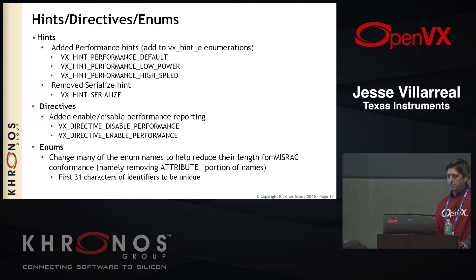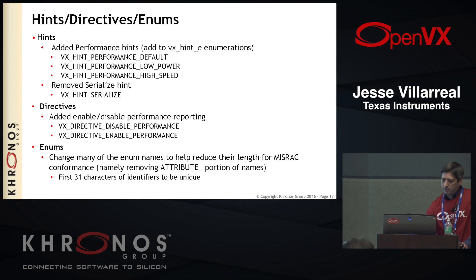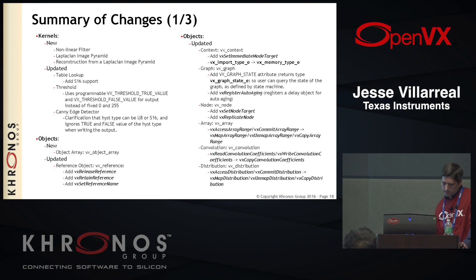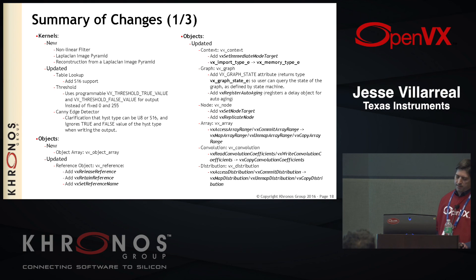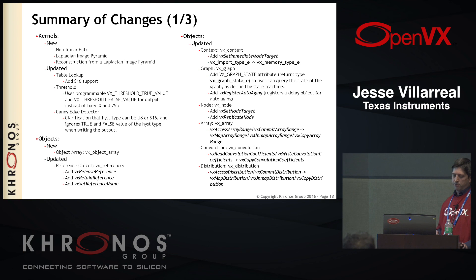Regarding the convolution changes shown in the summary: a lot of these objects had VX access and VX commit, and they were changed to the map, unmap, and copy approach. Before there was read and write, and we've combined those to a single copy where you can define if it's read only or write only. So that functionality gets combined into one function.